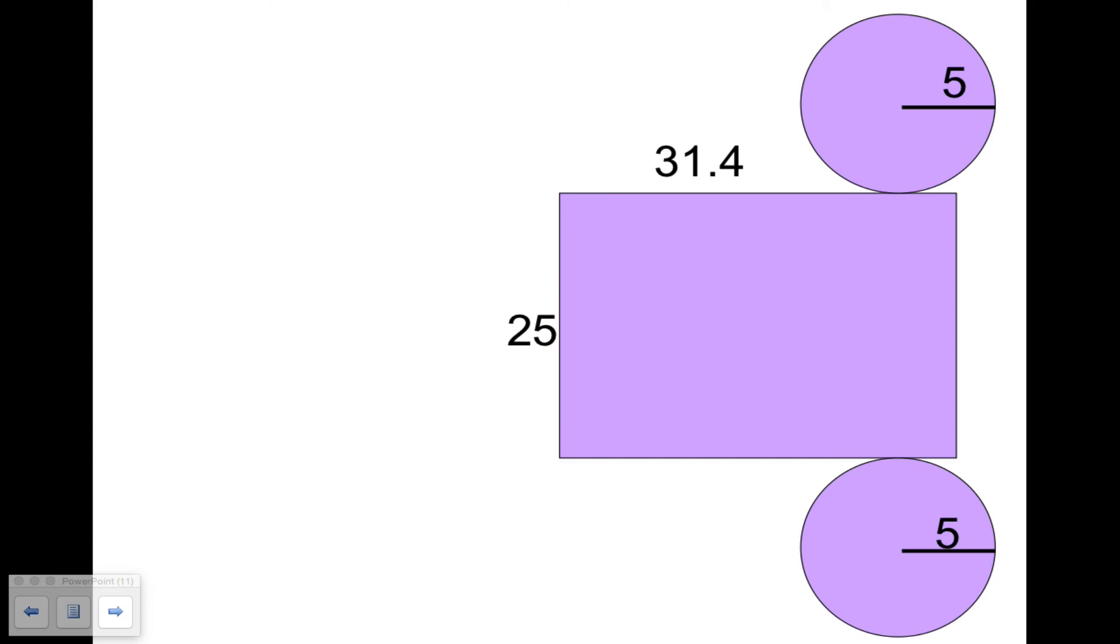Now we can find the area of that rectangle pretty easily by multiplying the length times width or base times height. That would be the lateral area. Lateral area equals base times height, 25 times 31.4. Try that on your calculator. Lateral area equals 785.